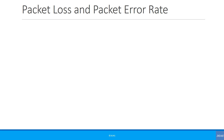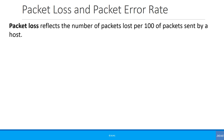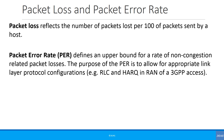Let's also look at packet loss and packet error rate. Packet loss reflects the number of packets lost per hundred packets sent by the host. Packet error rate defines an upper bound for the rate of non-congestion-related packet losses. You can have congestion-related and non-congestion-related packet losses. The purpose of packet error rate is to allow for appropriate link layer protocol configurations — for example, RLC and hybrid ARQ in the RAN of a 3GPP access.